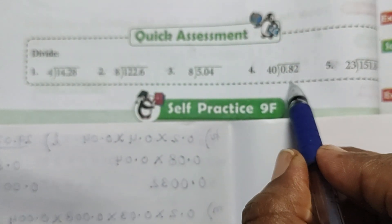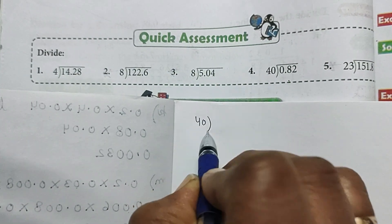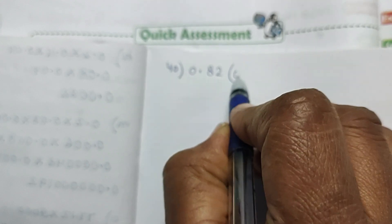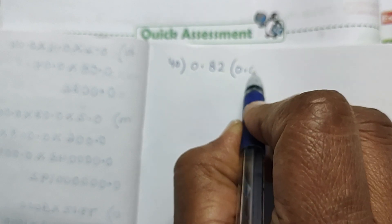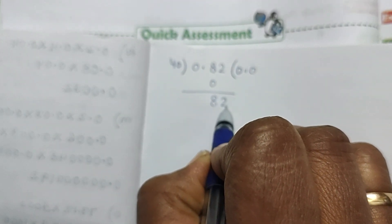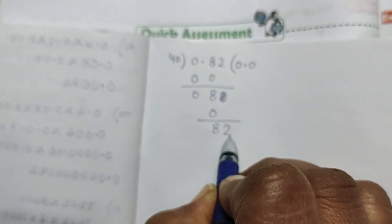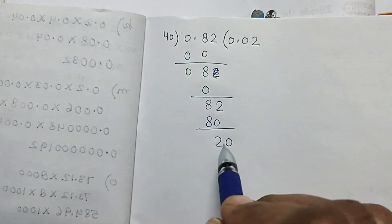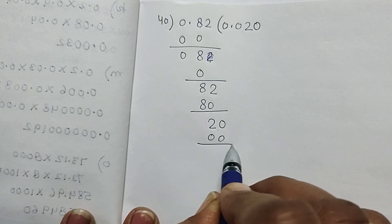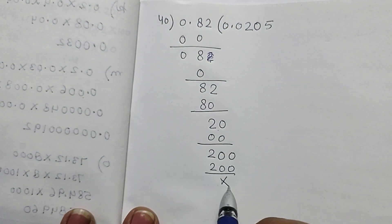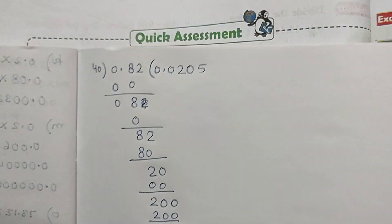Fourth part: divide 0.82 by 40. Zero is obviously smaller, put 0 and place decimal. Consider 8: 40 zeros are 0, can't divide 8 by 40 so put 0. Bring down 2: 82, 40 twos are 80, 82 minus 80 is 2. Add 0: 20, 40 doesn't go, put 0. Add another 0: 200, 40 fives are 200. Division complete, answer is 0.0205.